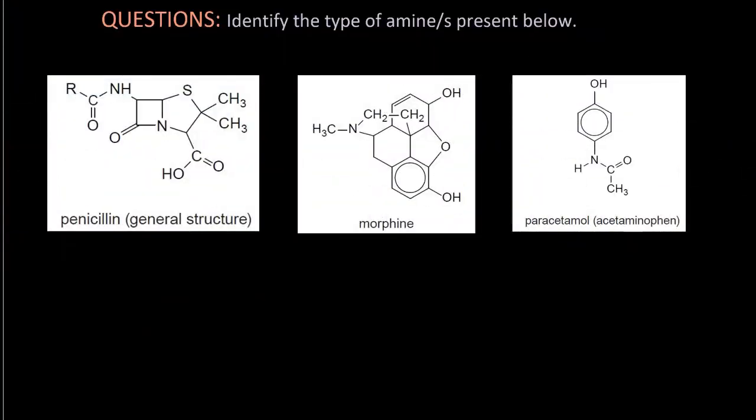So identify the type of amine or amines present below. You know what? It's a dirty trick. In penicillin, the nitrogen is attached to a carbonyl group. And that means that C=O, that means that it's an amide, not an amine. So avoid that trick.